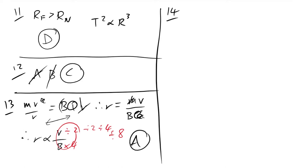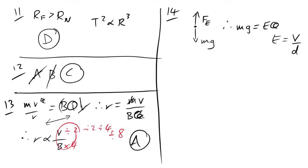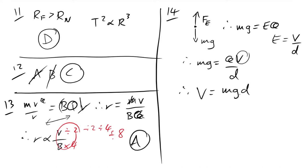Question 14: a charged particle levitates between two parallel plates. Electric force upwards balances weight downwards: mg = EQ. For parallel plates, E = V/D, so mg = QV/D. Rearranging for V: V = mgD/Q. The answer is B.